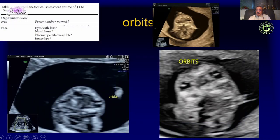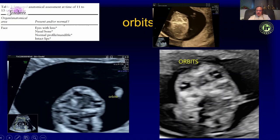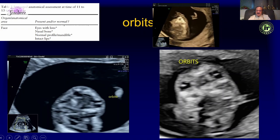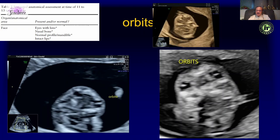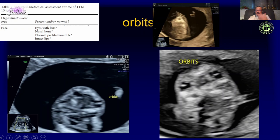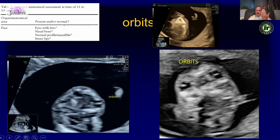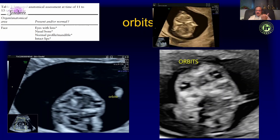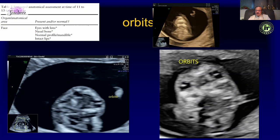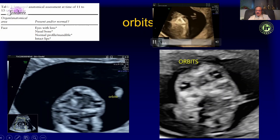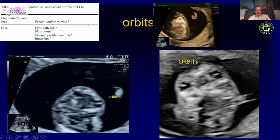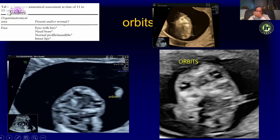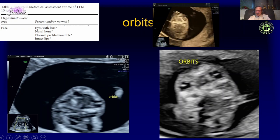The ISUOG guidelines also recommend looking at eyes and lens. In the same axial plane used for the head, we can go down to look at the orbits and go further down to look at the alveolar ridge of the maxilla.